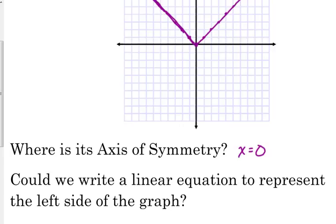So, my next question is, could we write a linear equation to represent the left side of the graph? And the left side, what's the slope of the left side? Negative 1. What's its y-intercept? 0. So, the left side of this graph could be represented by y equals negative x.